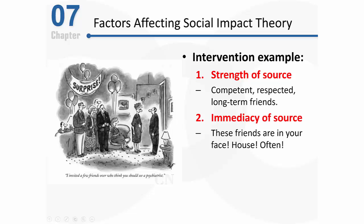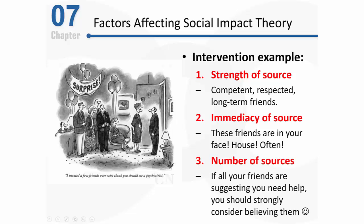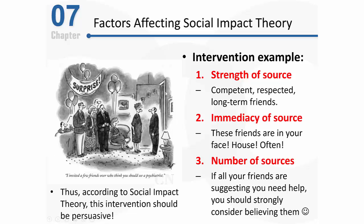Another key factor is the number of sources of social influence working in this situation. We can see there are a lot of people — these are all of his friends. The more sources of social influence, the more this man is going to be influenced. If you evaluate this situation in terms of social impact theory and its key factors, we would predict that this intervention would be pretty persuasive. Sorry, buddy.